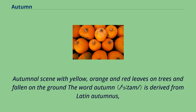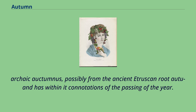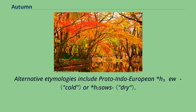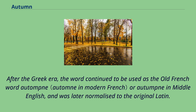The word autumn is derived from Latin autumnis, archaic autumnis, possibly from the ancient Etruscan root autu, and has within it connotations of the passing of the year. Alternative etymologies include Proto-Indo-European H3 Ugo or H2 Sos. After the Greek era, the word continued to be used as the Old French word autompne or autumpt in Middle English, and was later normalized to the original Latin.